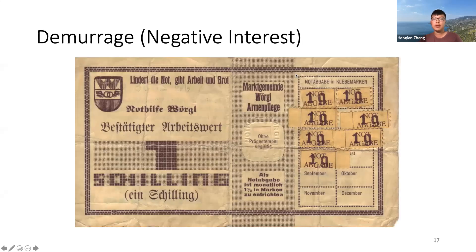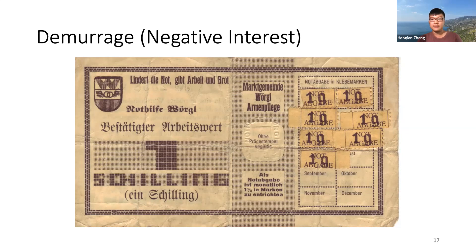How can we improve it? We can apply demurrage — or negative interest rates — to control the supply of money, and therefore indirectly control the price level. The picture shows how demurrage can be implemented with paper currency: in order to validate the note, each month the holder has to put a stamp on it, which costs 1% of the value of the note itself — implementing a 1% negative interest rate per month.